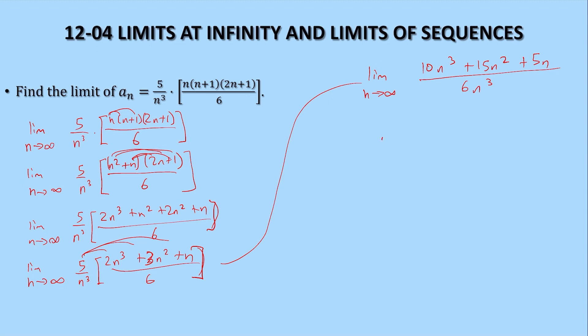So the degree of the numerator is 3. The degree of the denominator is 3. N equals D. So it is the leading coefficients, which would be 10 over 6, which is going to reduce to 5 over 3.